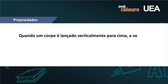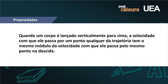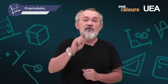Mas há duas propriedades importantes. Vamos à segunda: quando um corpo é lançado verticalmente para cima, a velocidade com que ele passa por um ponto qualquer da trajetória tem o mesmo módulo da velocidade com que ele passa pelo mesmo ponto na descida. As propriedades são importantes porque muitas vezes, sozinhas e sem cálculos, resolvem determinadas situações. Vamos resolver um problema simples para sedimentar isso na sua mente.